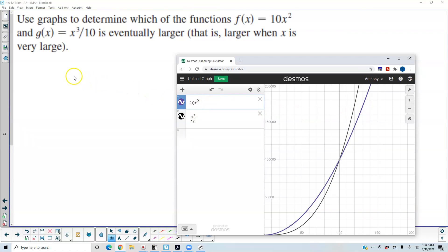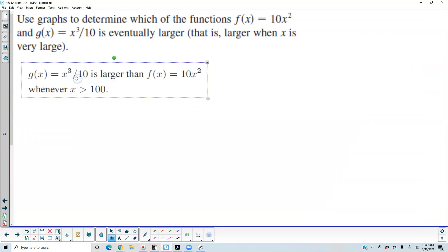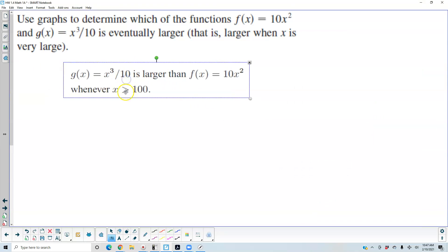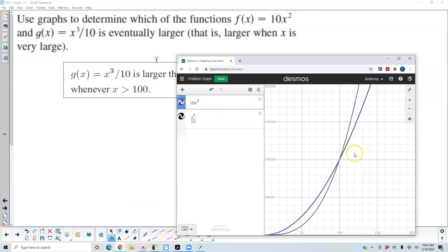So what is happening? Well, what's happening is that g(x), which is equal to x³ over 10, is larger than f(x), which is equal to 10x², whenever x is greater than 100. So that means here, the value of 100, when x is 100, that's when g(x) is going to be larger than f(x). And then before that, we would say that f(x) was larger than g(x).